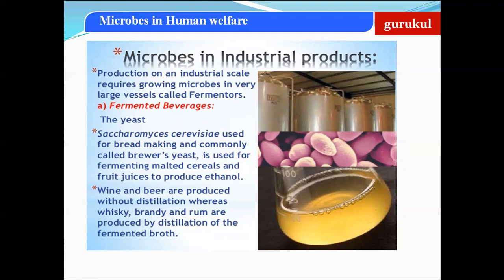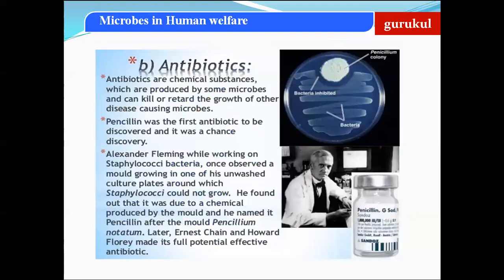Wine and beer are produced without distillation, whereas whiskey, brandy, and rum are produced by distillation of the fermented broth. These are some of the fermented drinks produced using microbes. This is the first industrial use.